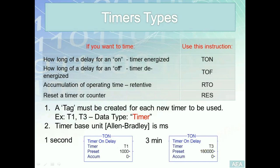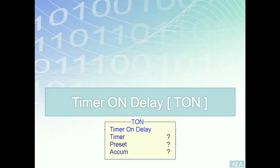Those are the basics covering different timer types and their parameters. We're now going to start with the first one, timer on delay (TON). I'm going to rely on the software to show you how to create a tag for the timer, how to insert it into our program, and how the different parameters — enable bit, timer timing, and done bit — behave in a solution.